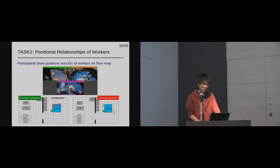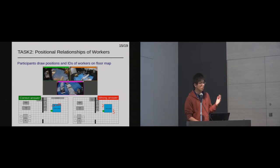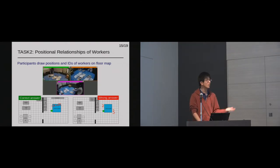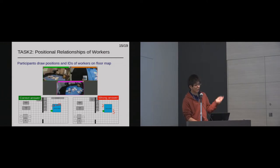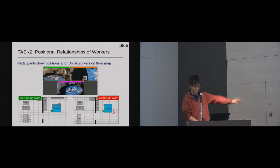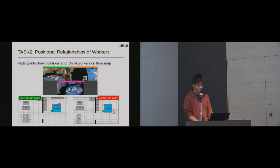In Task 2, we tested whether the proposed visualization assists understanding of the positional relationship of multiple workers, such as formations. Participants browse three first-person videos and draw positions and IDs of multiple workers on a floor map. The videos last about 20 seconds and the difficulty is that workers' formations are continuously changing during the video. Answers are scored by their positions and formations of their IDs using grid lines.